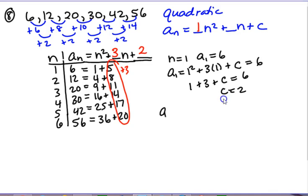So my rule ends up being a sub n equals n squared plus 3n plus 2.